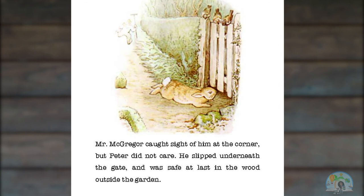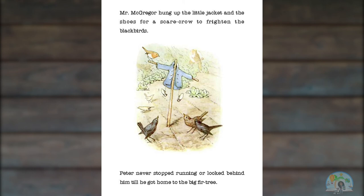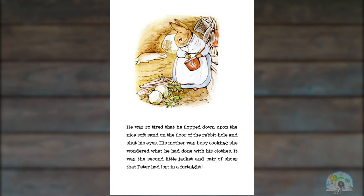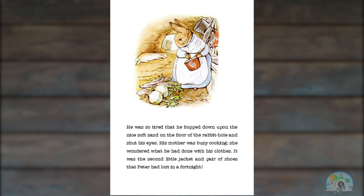Mr. McGregor hung up the little jacket and the shoes for a scarecrow to frighten the blackbirds. Peter never stopped running or looked behind him till he got home to the big fir tree. He was so tired that he flopped down upon the nice soft sand on the floor of the rabbit hole and shut his eyes. His mother was busy cooking. She wondered what he had done with his clothes. It was the second little jacket and pair of shoes that Peter had lost in a fortnight. Let's look at the word fortnight. I know when I see that word, I think of the game, but I don't think they're talking about the game here. I'm wondering if the word fortnight is maybe dealing with a period of time — maybe not too long ago, Peter lost his clothes before. So maybe fortnight is talking about a few days or maybe a few weeks ago.